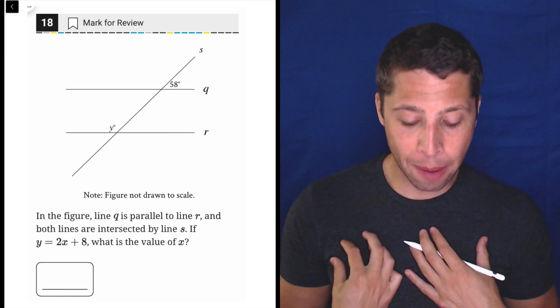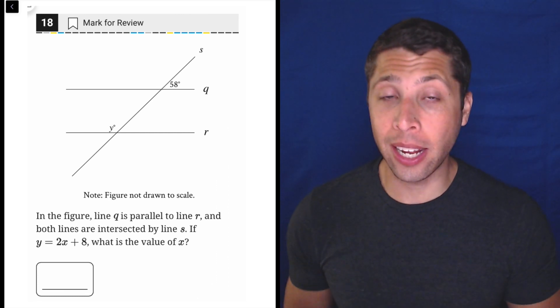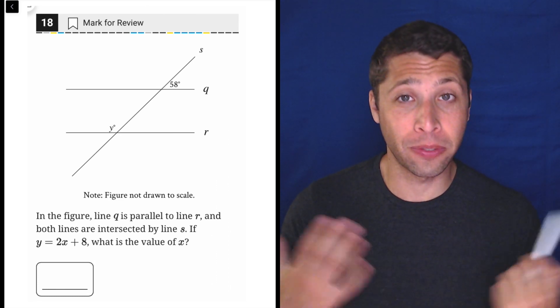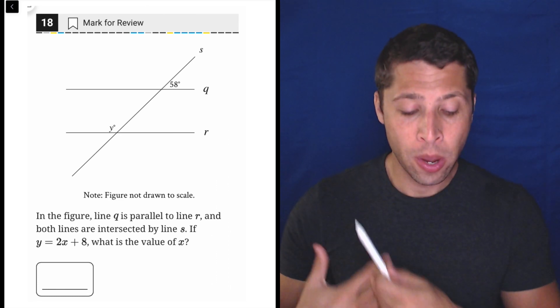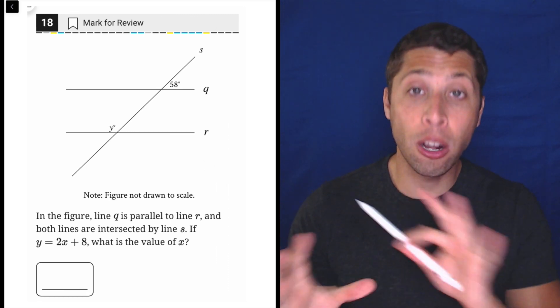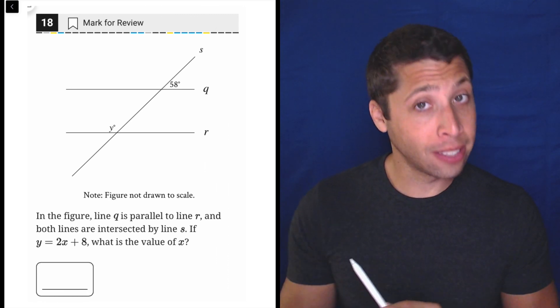The way I learned to describe this is we have two parallel lines cut by a transversal. Transversal is just a fancy name for another line. So this creates a lot of congruent angles and supplementary angles.